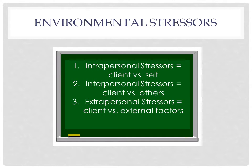The Newman Systems Model outlines three types of environmental stressors. I will give the most general definitions of the first two and then discuss the third in more depth. The first, intrapersonal stressors, are internal to the client system — it is as if the client is versing him or herself. Number two, interpersonal stressors, are external to the client system but at close range, as if the client is versing others or possibly role expectations. The third type, which is my focus, is extrapersonal stressors. These occur outside the client system boundaries but at farther range — it is as if the client is versing something he or she has less control over.